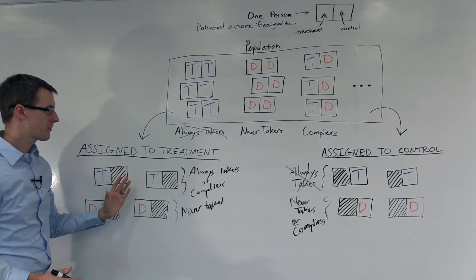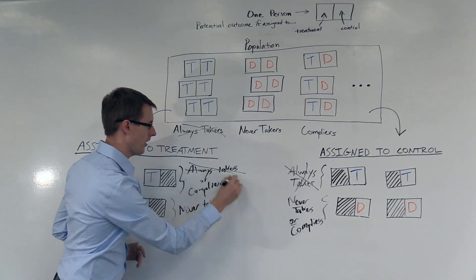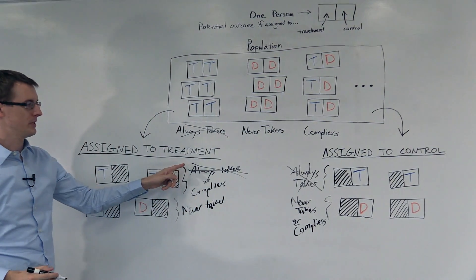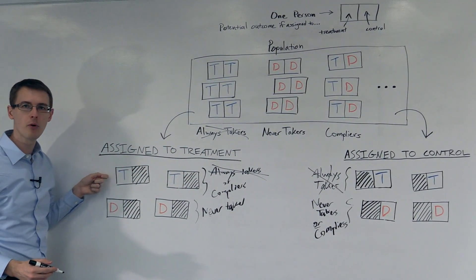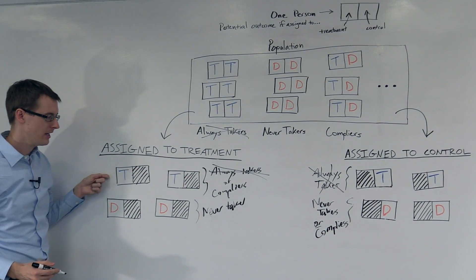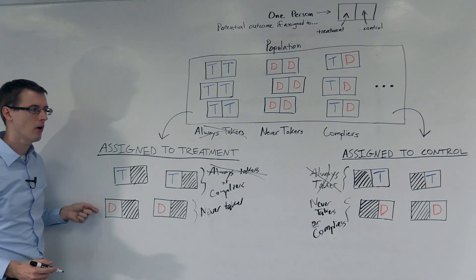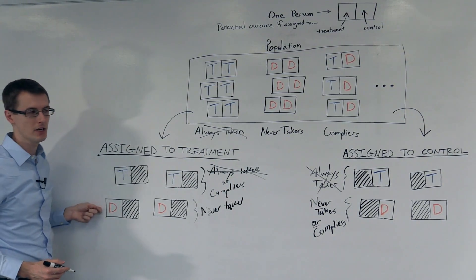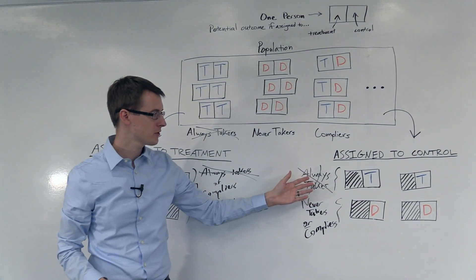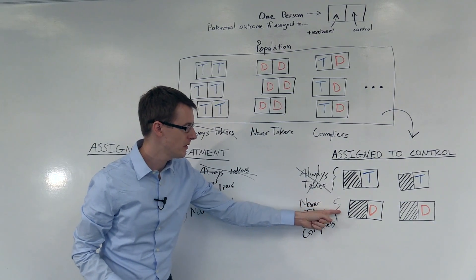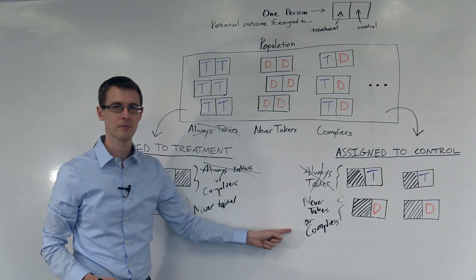Over here in the treatment group, we also don't have any always-takers. So we know these people are compliers, and we know these people are never-takers. But the problem is, over here in the control group, we don't know whether these people are never-takers or compliers.